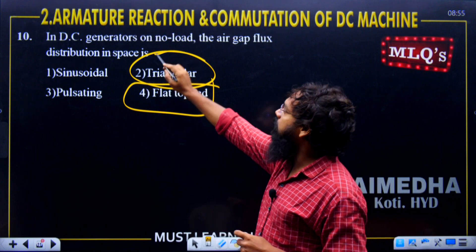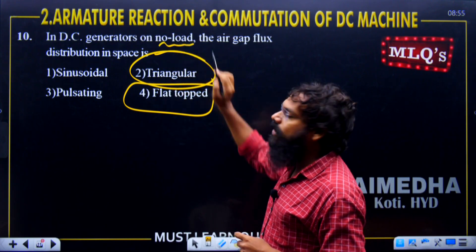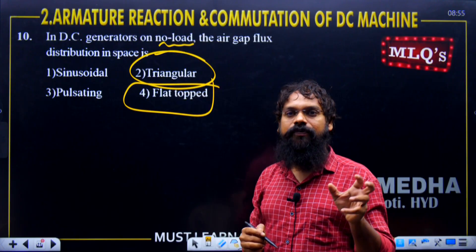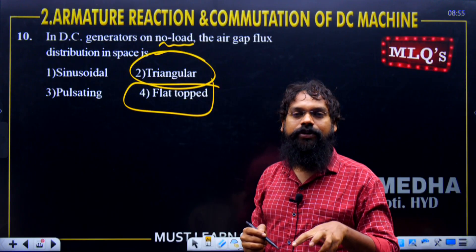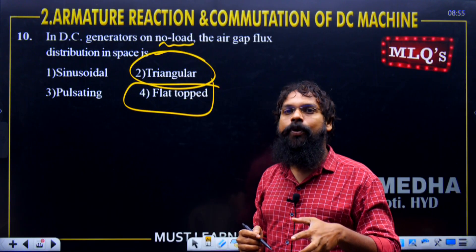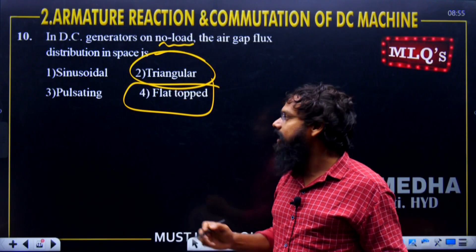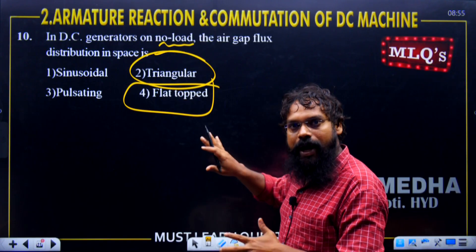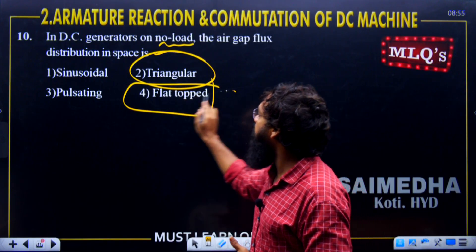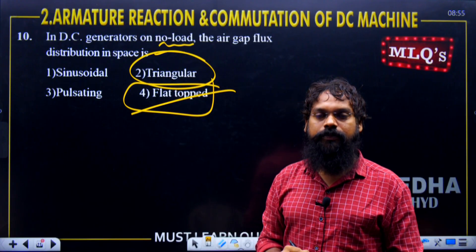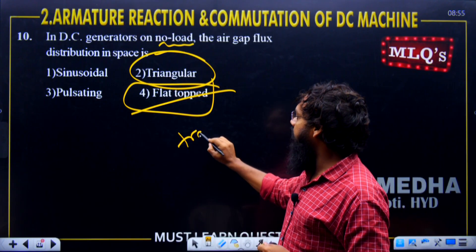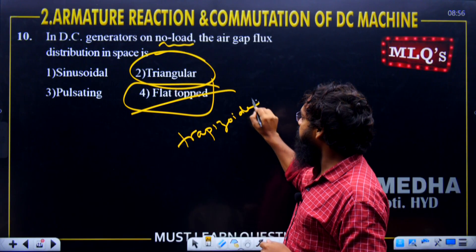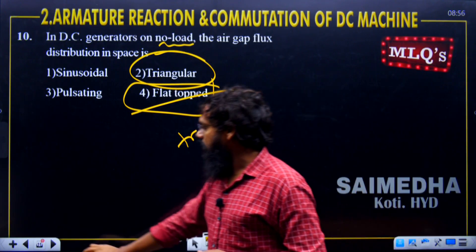Since load is not connected, there is no armature flux. Therefore the main field is undisturbed, and the main field MMF is a flat top. The main field wave is also called a trapezoidal wave.